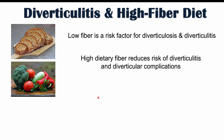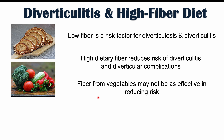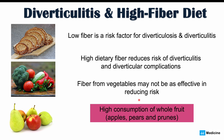Looking at the three food groups in the prudent diet — fruits, vegetables, and whole grains — individually, fiber from vegetables is not as effective in reducing the risk of diverticulosis and diverticulitis. More recent studies show that high consumption of whole fruit, specifically apples, pears, and prunes, is a better source of fiber for reducing the risk. Proper consumption of these whole fruits is very important in reducing diverticulosis and diverticulitis risk.